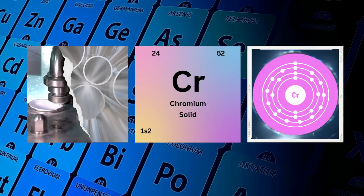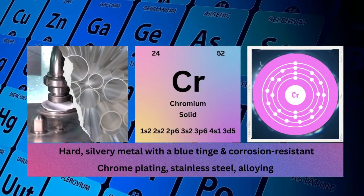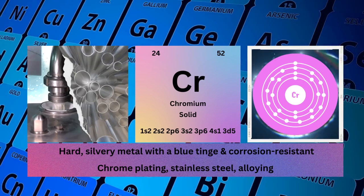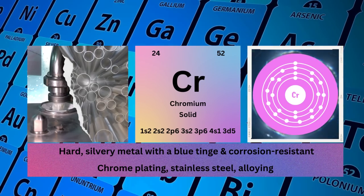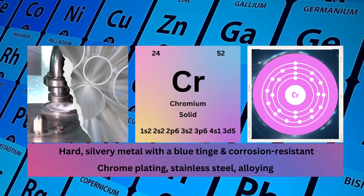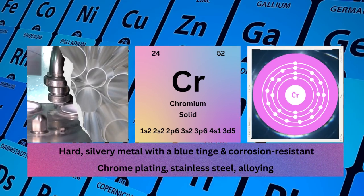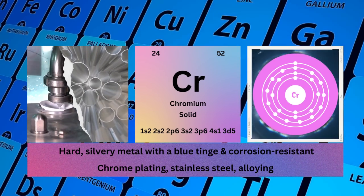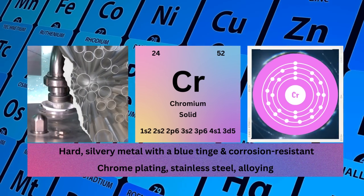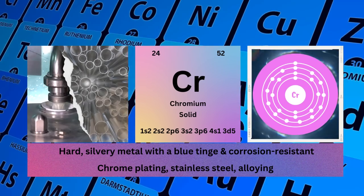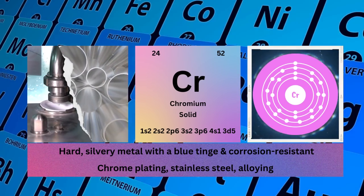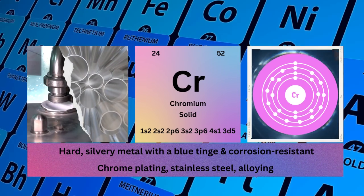Chromium. Atomic No. 24. Mass No. 52. Symbol Cr. State Solid. Electronic Configuration 1S2 2S2 2P6 3S2 3P6 4S2 3D5. Physical Properties: Hard, Silvery Metal with a Blue Tinge and Corrosion Resistant. Chromium is used for chrome plating, stainless steel, and alloying.